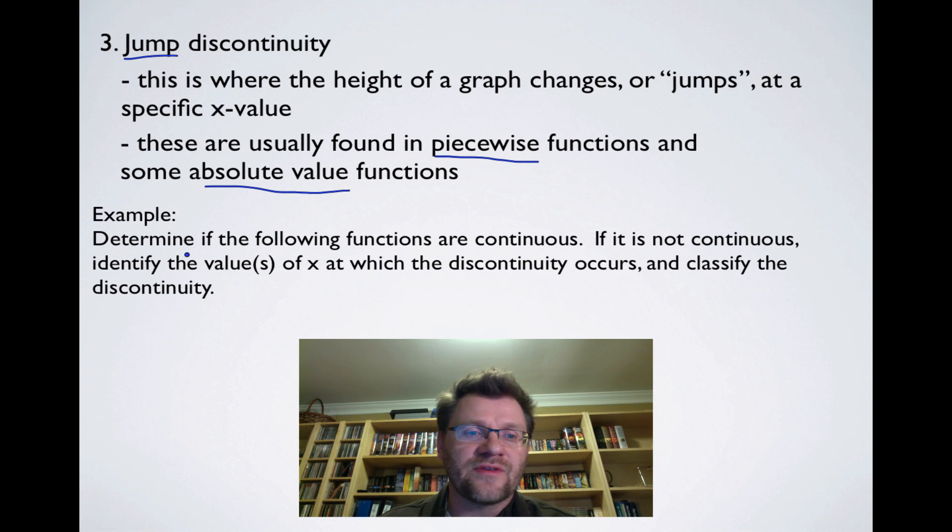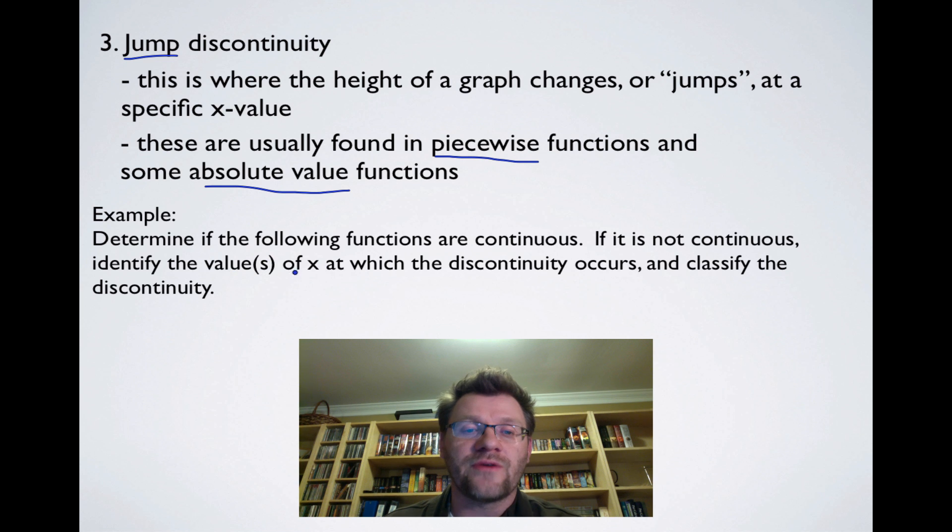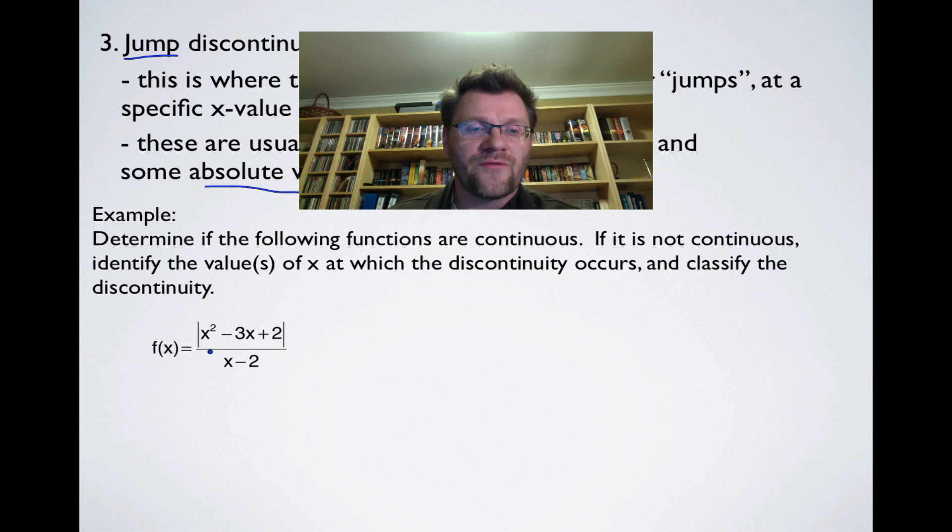So the example here says, determine if the following functions are continuous. If it is not continuous, identify the value or the values of x at which the discontinuity occurs, and classify the discontinuity. So our first one here is the absolute value of x squared minus 3x plus 2. And we saw something quite similar to this yesterday when we were looking at the limit of this sort of thing. But we know that we can factor this thing into x minus 2 and x minus 1. And it would be the absolute value of both, and that's over x minus 2.